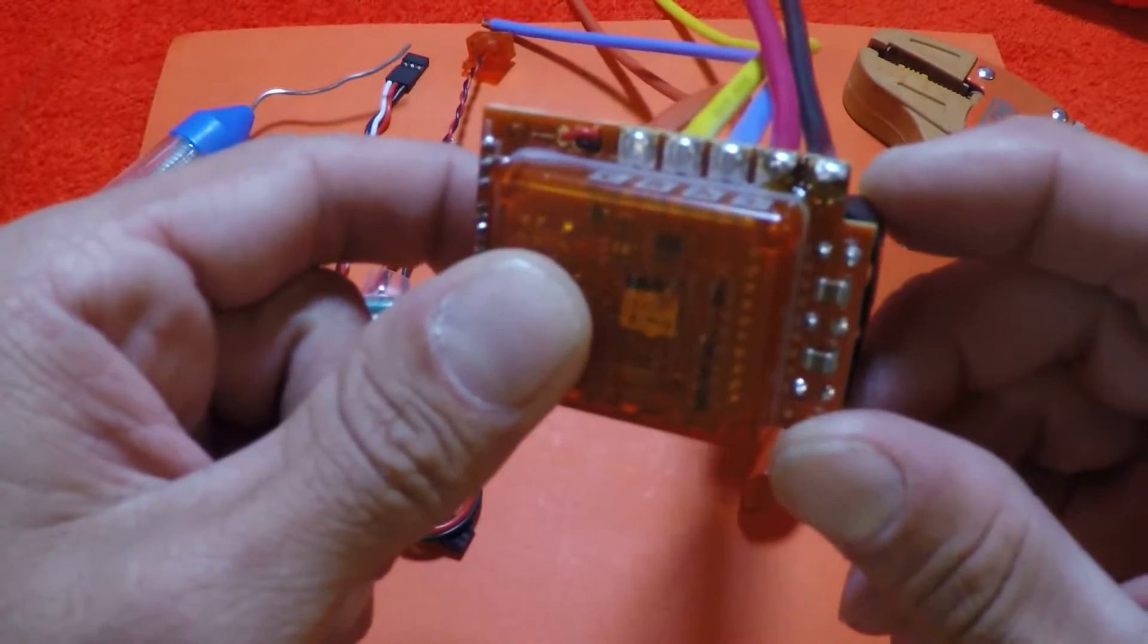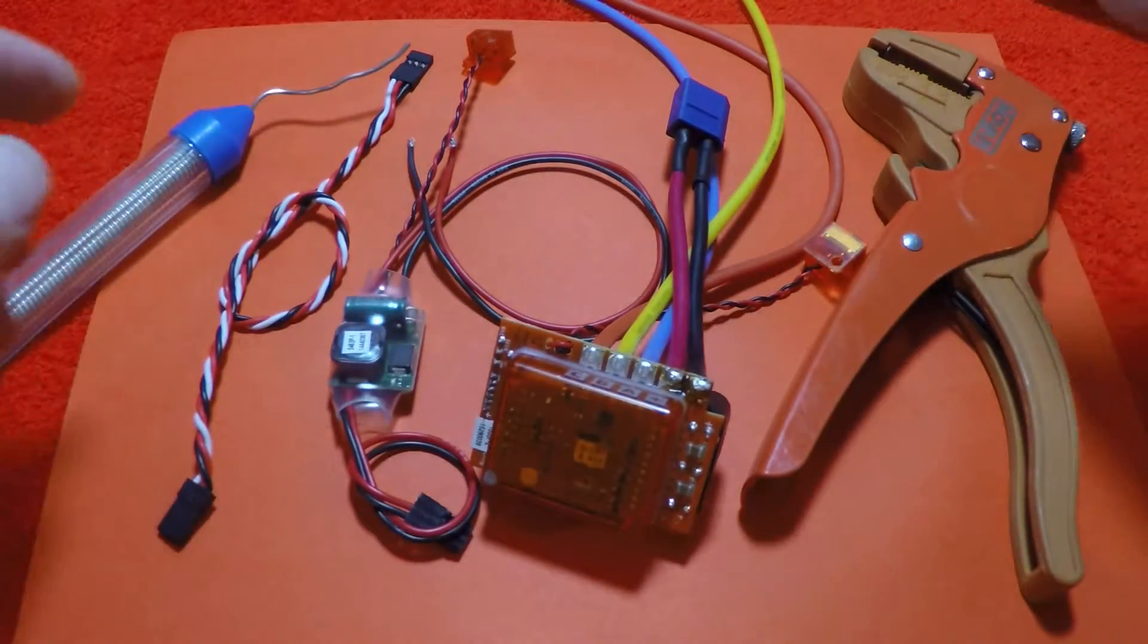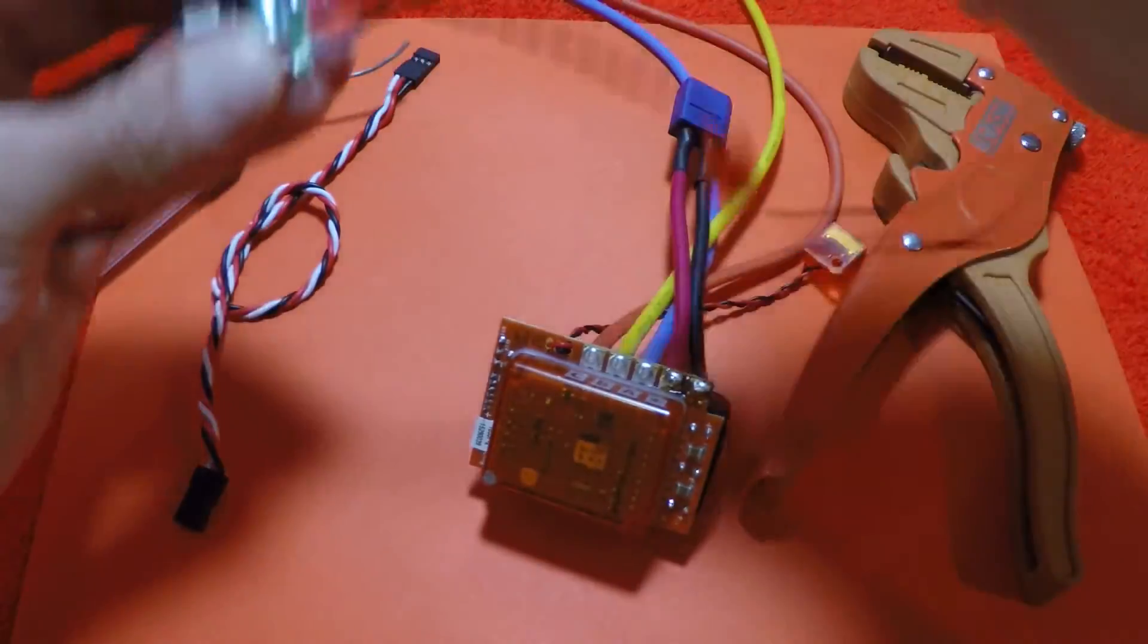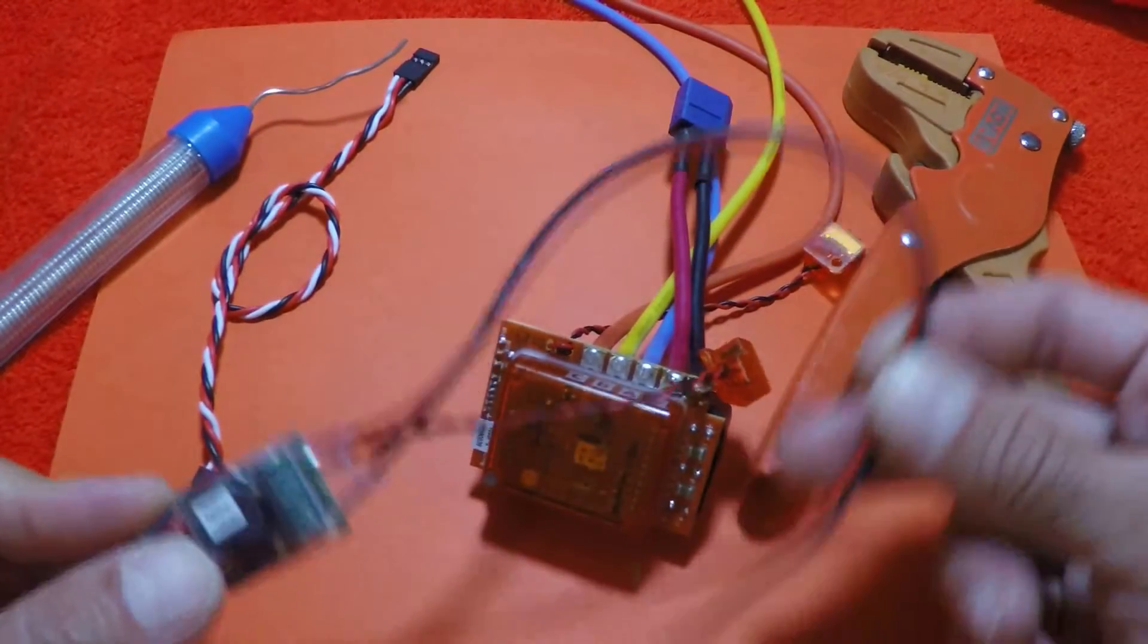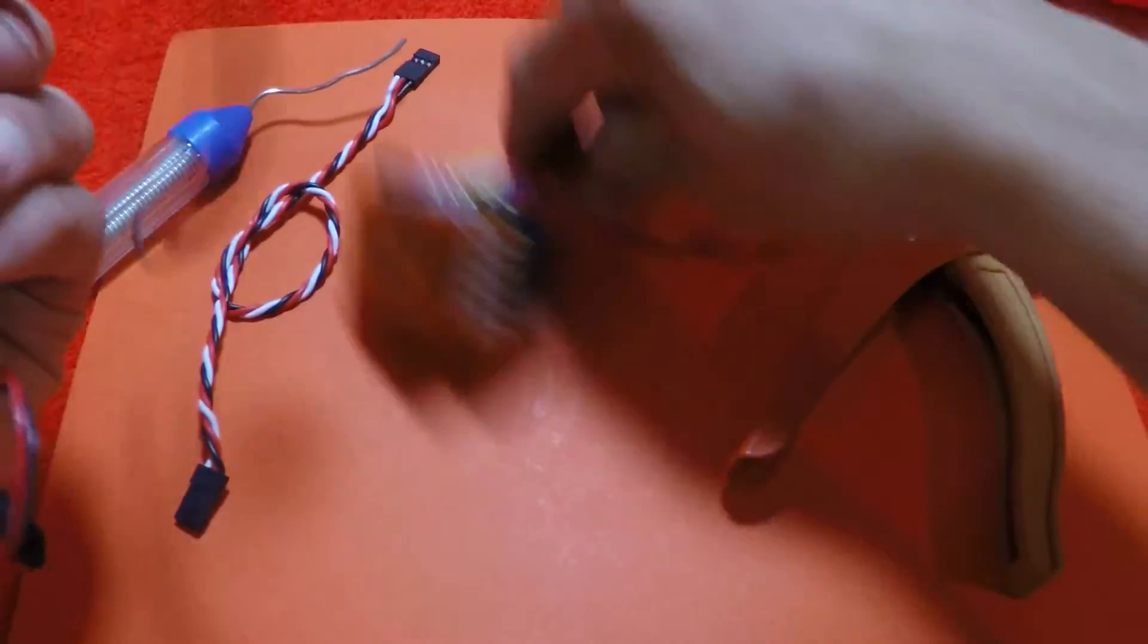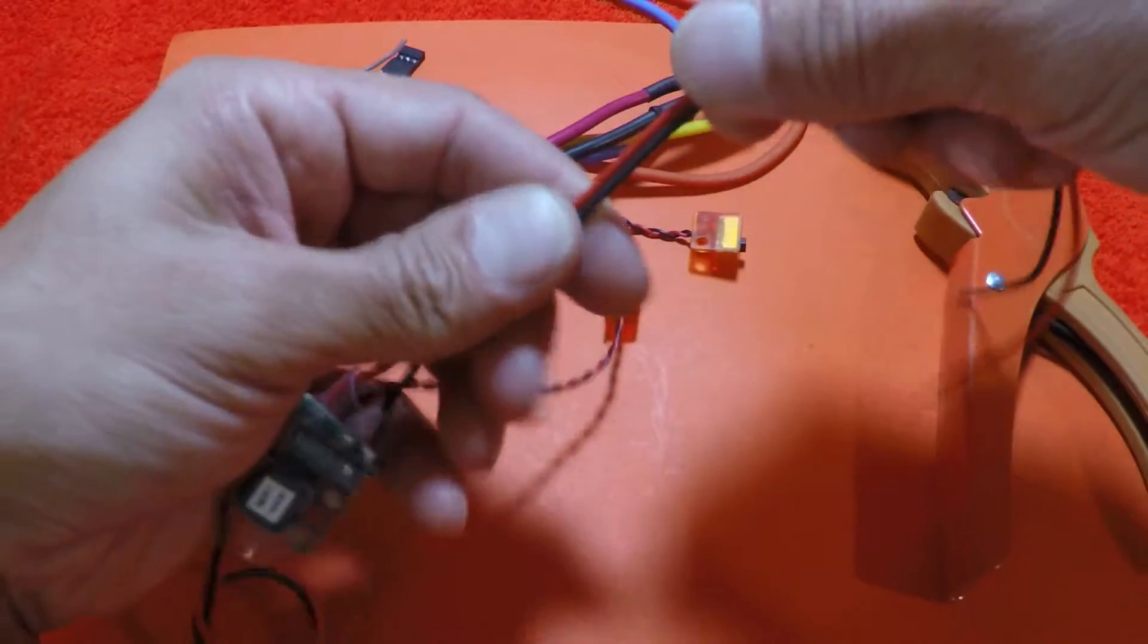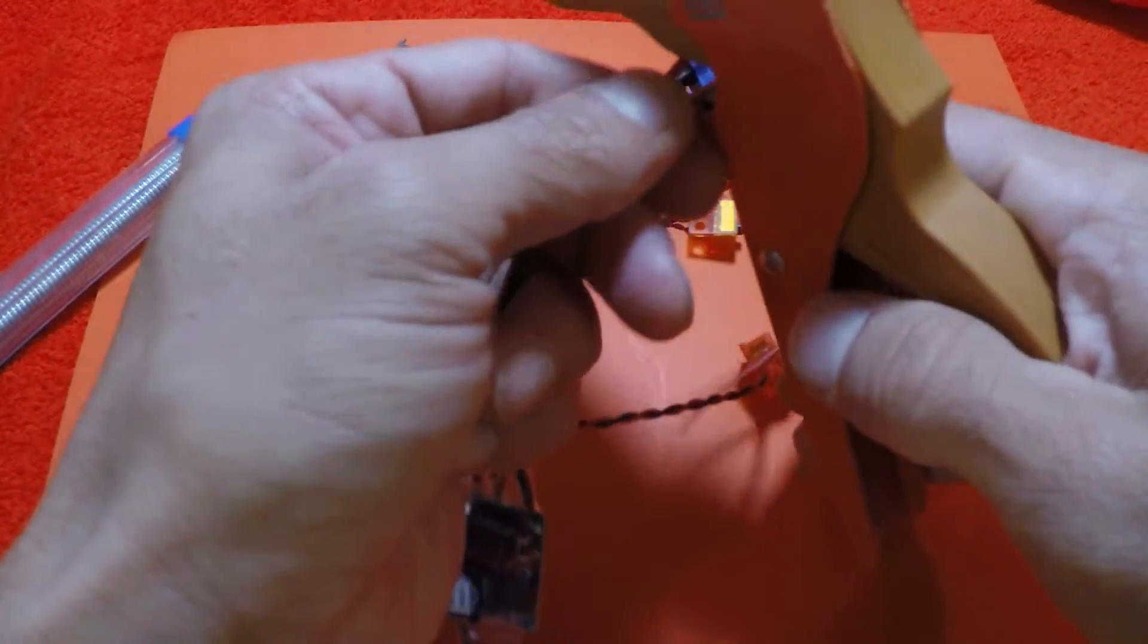My BEC wires I usually cut at least in half. We give you a ton of wire in case you have any crazy installs, but for the most part half is more than enough. So I go to about right there.